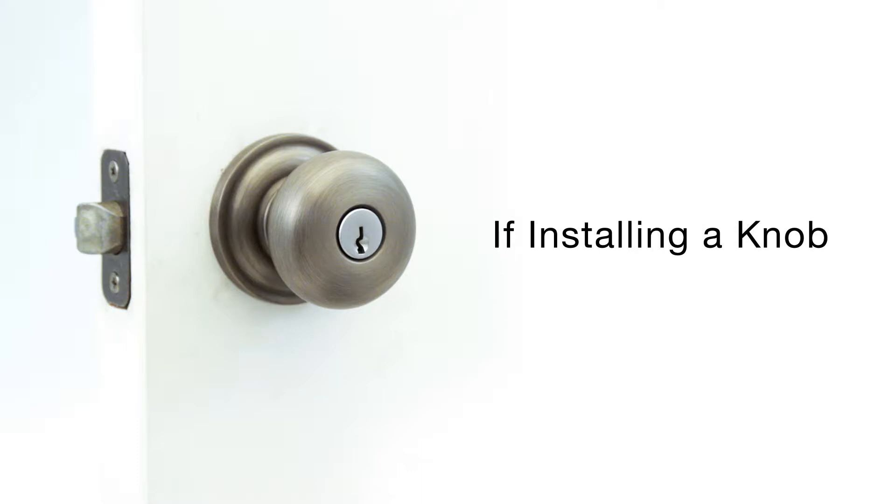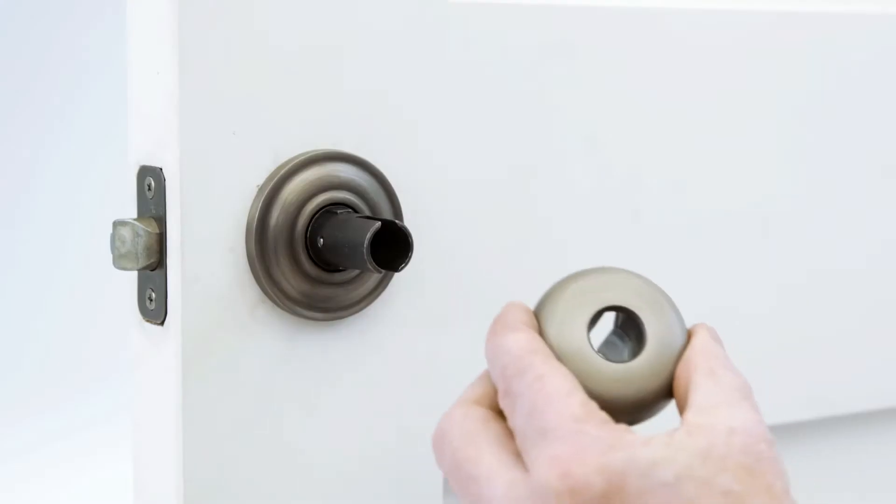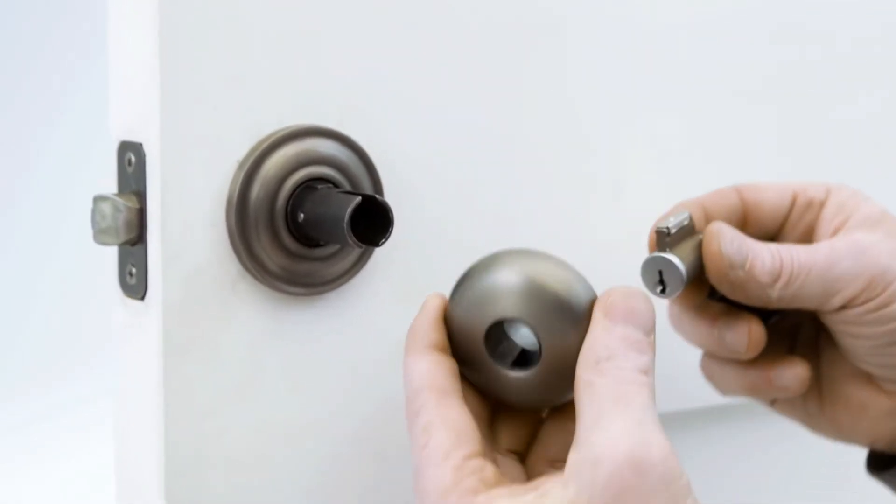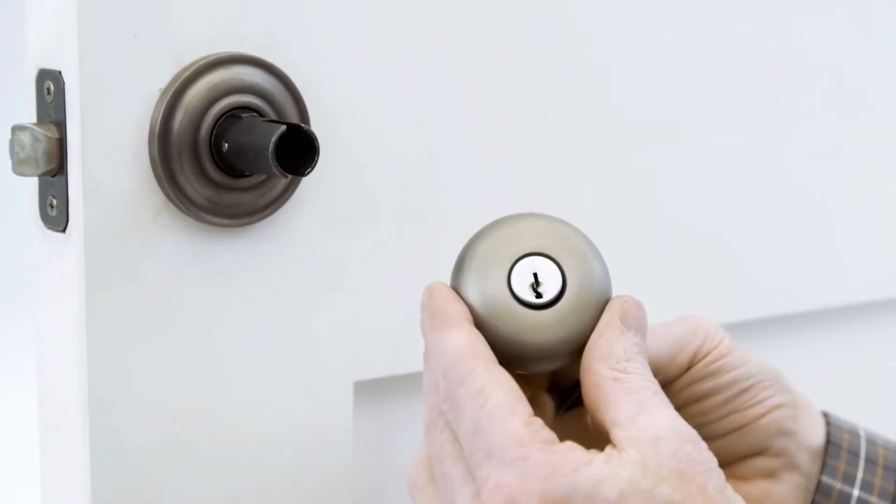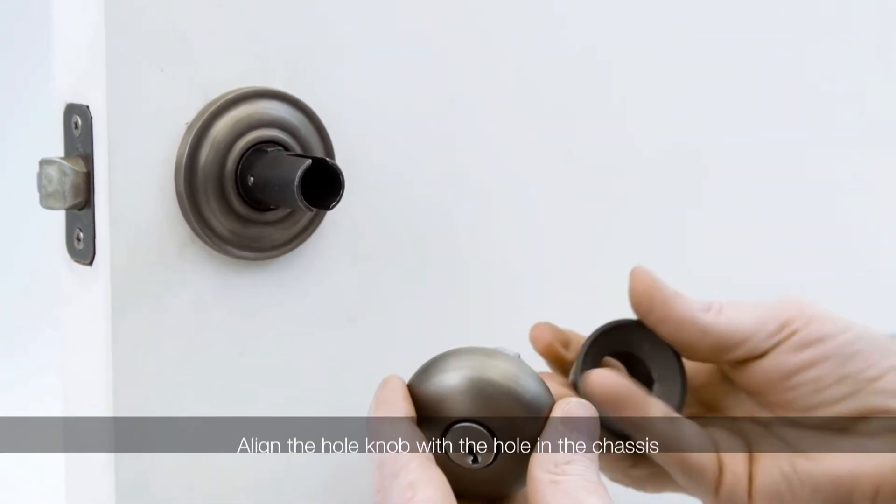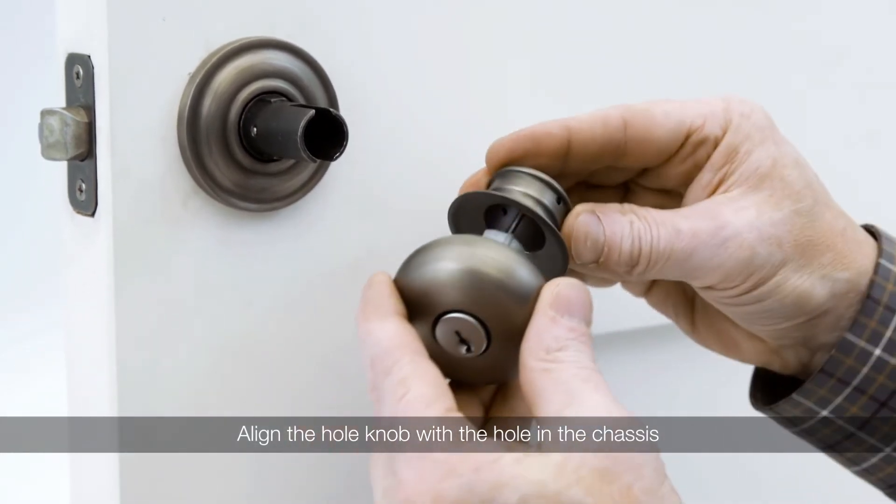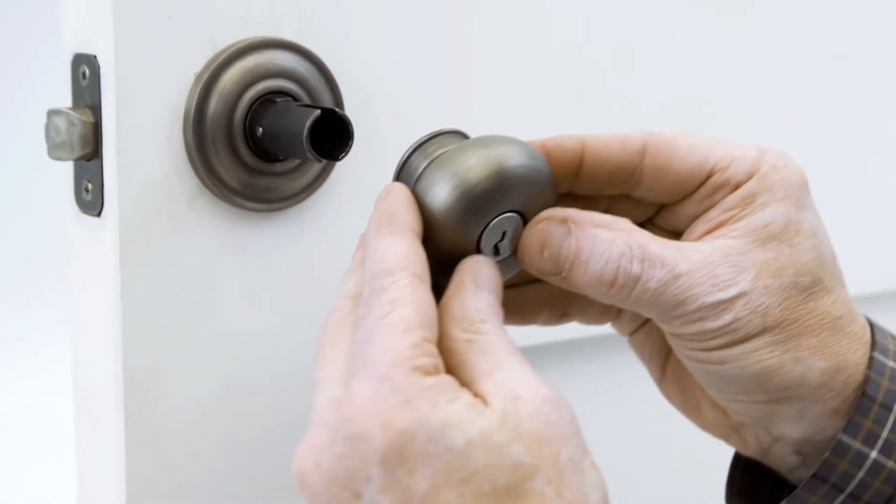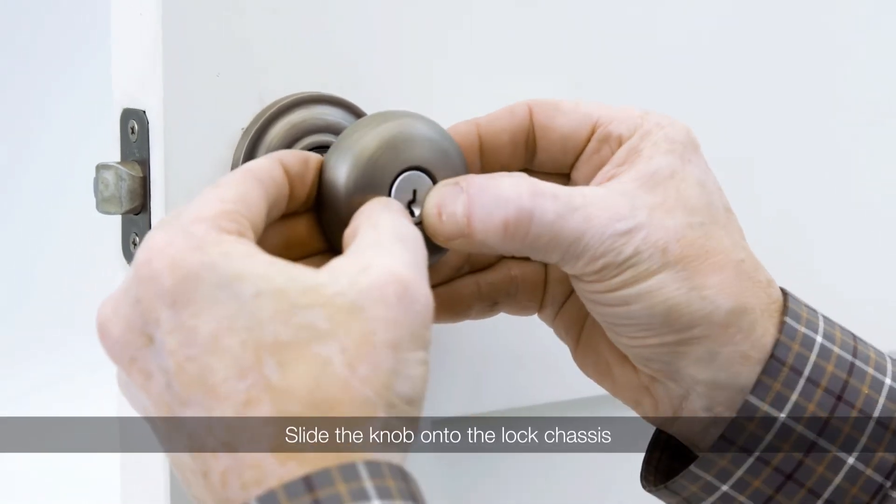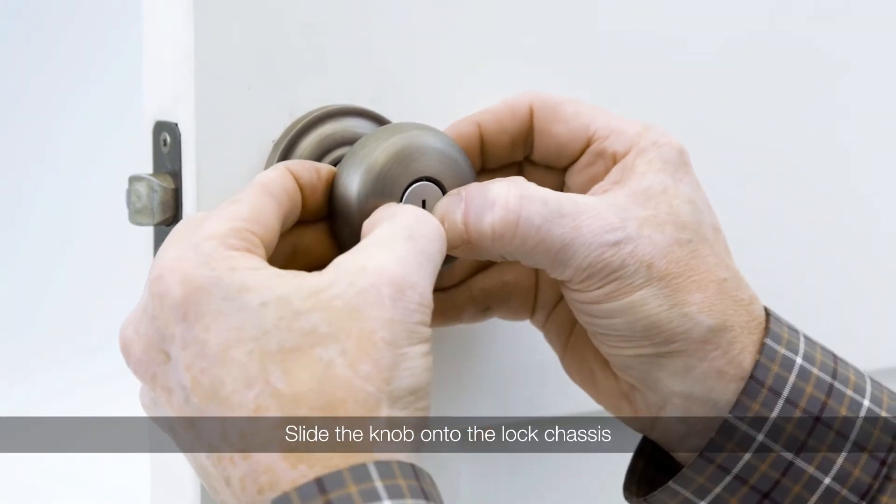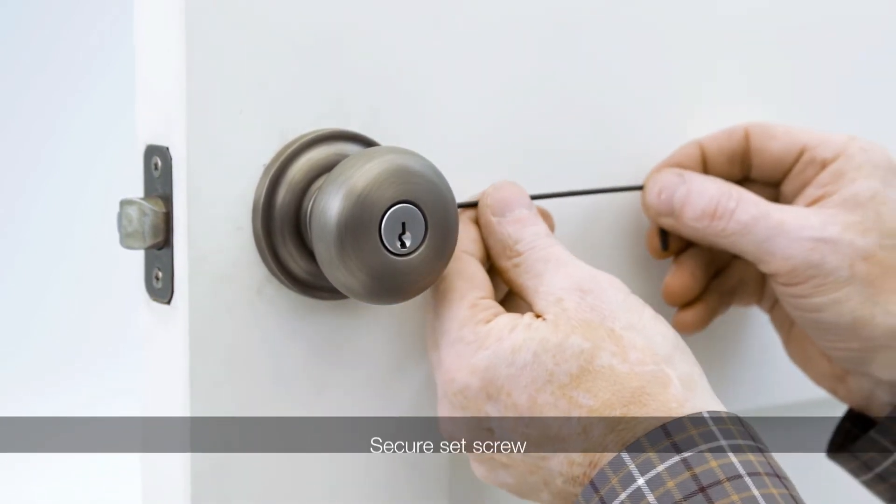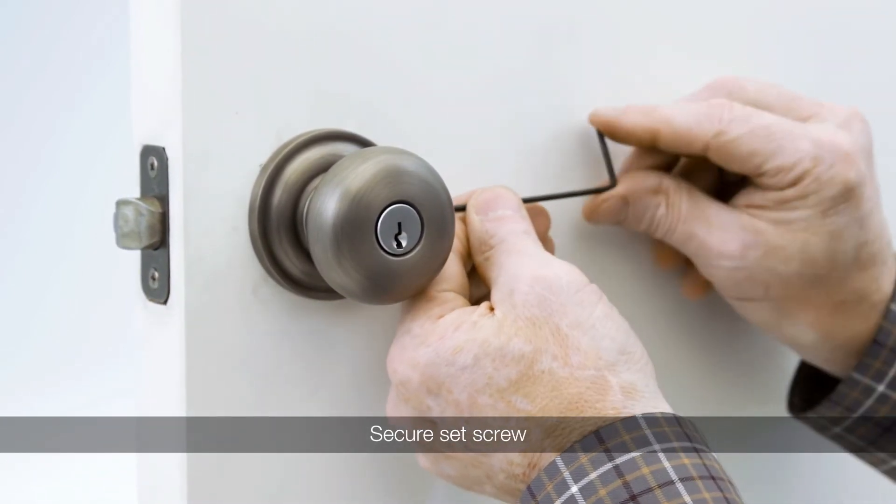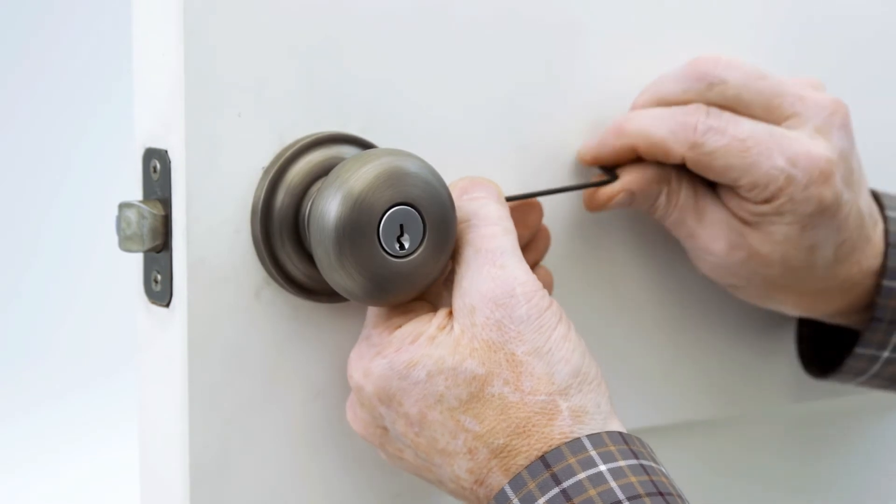If installing a knob keyed entry lock, install the cylinder into the knob with the key slot in the cylinder facing down. Next, install the knob collar with the hole in the collar facing towards the door hinges onto the back of the knob. Slide the knob onto the locked chassis and slightly rotate the knob back and forth while pushing the knob into place. Insert the allen wrench through the hole in the knob and turn the set screw clockwise to hold the knob in place.